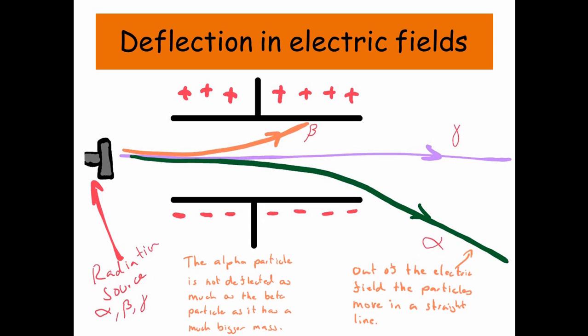It's very easily deflected. And it's going to be deflected in an electric field towards the positive plate. The alpha particle, which is much heavier than our little beta particle counterpart, that's not going to be deflected by as much. And once it leaves the electrical field, it actually carries on in a straight line.